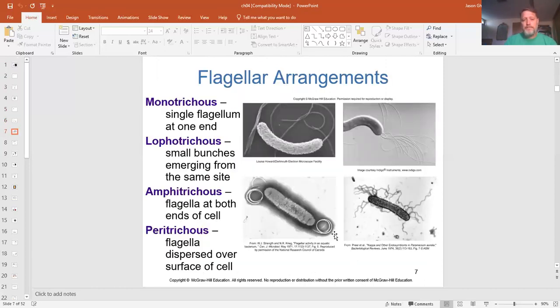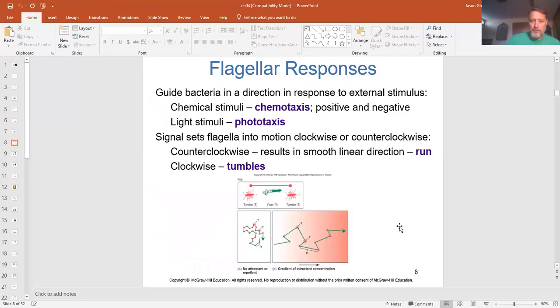Flagella have different arrangements. You can have a monotrichous, meaning it's a single one at one end. A lophotrichous is where you have a bunch of them at one end. Amphitrichous, where you have some at both ends. Or there could be peritrichous, where they're all around on it. So those are the arrangements of flagella that we normally think of as flagella.